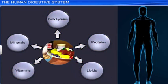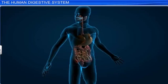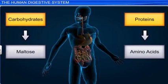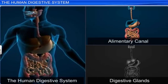However, our body is incapable of using certain biomacromolecules, such as carbohydrates and proteins, in their original form. It therefore relies on the digestive system to break down food and convert the biomacromolecules into smaller, simple and absorbable molecules. Our digestive system comprises the alimentary canal, or the gastrointestinal tract, and the digestive glands.